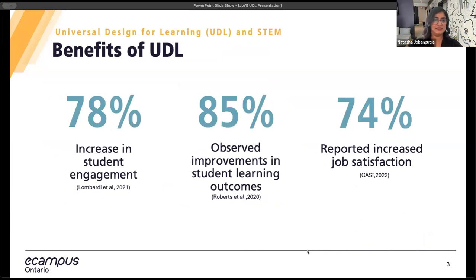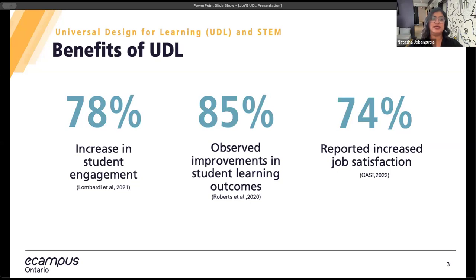Why should we implement UDL in STEM? Here are some compelling reasons. Implementing UDL in STEM courses has been shown to increase student engagement by 78%. When students are provided with multiple ways to access content, engage with material, and demonstrate understanding, they are more likely to be motivated and involved in their learning. Additionally, 85% of educators have reported improvements in student learning outcomes when using UDL principles. By accommodating different learning styles and needs, UDL helps students achieve a deeper understanding of STEM concepts. Educators themselves find that UDL enhances their teaching experience — 74% have noted increased job satisfaction.